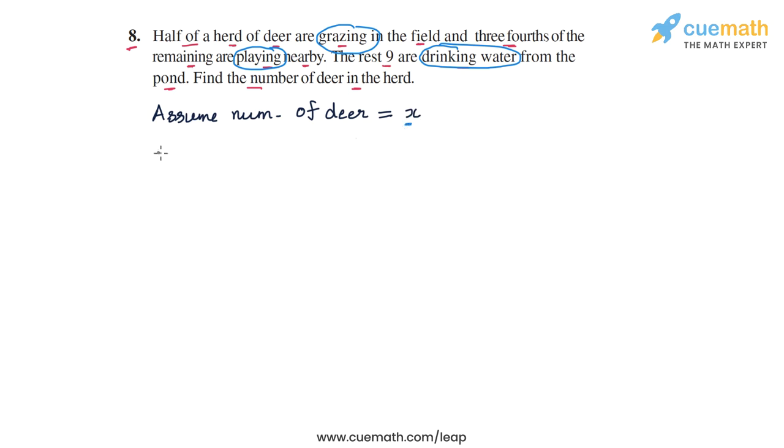So how many deer are grazing? The statement says half of the herd is grazing. So if the total strength of the herd is x, then the number of deer who are grazing should equal x by 2.